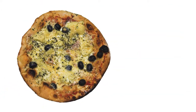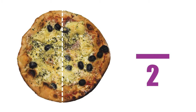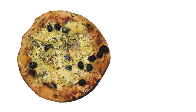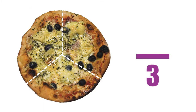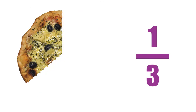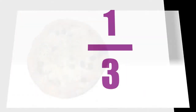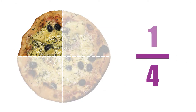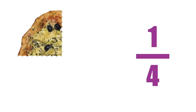If you were to divide up your pizza into a different number of slices, then you could produce a different set of fractions. For example, slice it into two and take one piece, and you now have half the pizza. Slice it into three and take one piece, and you now have a third of a pizza. Slice it into four and take one piece, and you now have a quarter of a pizza.